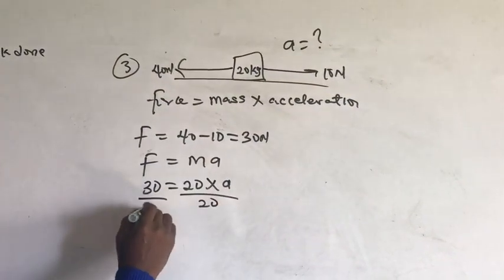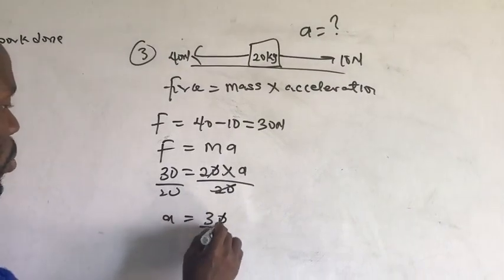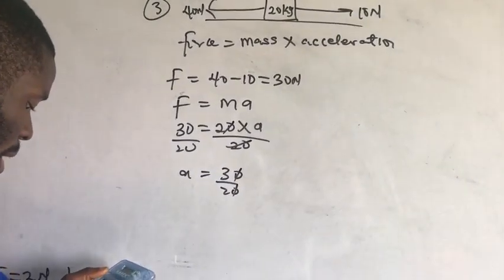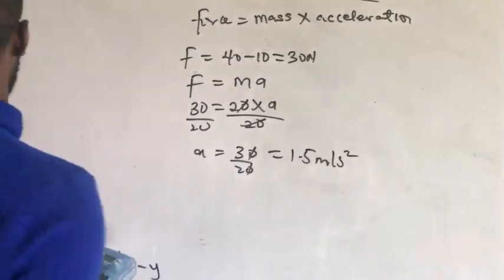So, the variables are by 20. By 20. Then, A is 30 over 20. Which is 3 over 2. And, what is 3 over 2? That is 1.5 meters per second squared.